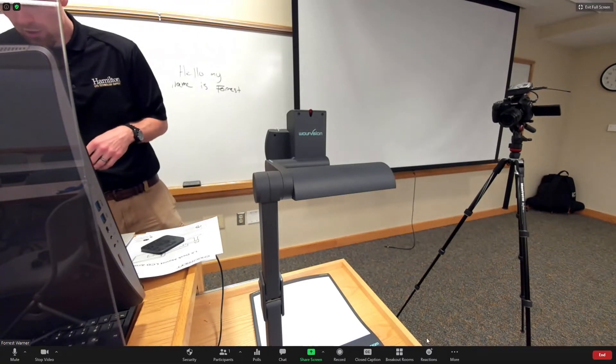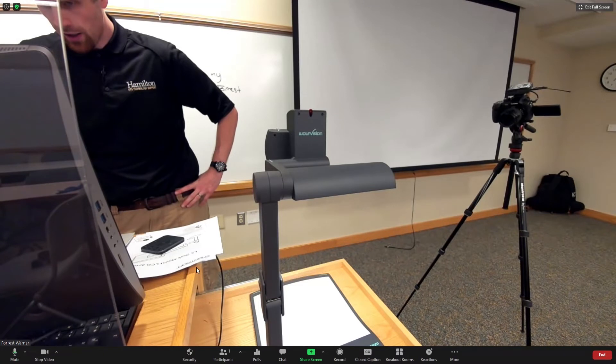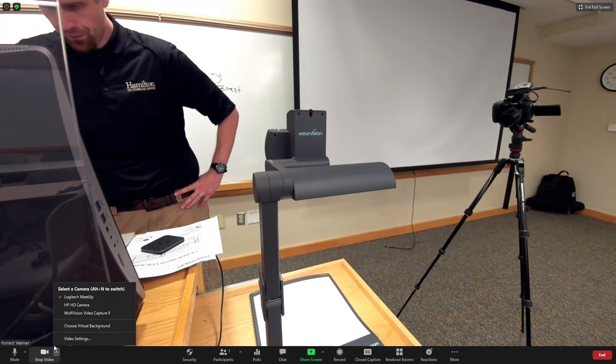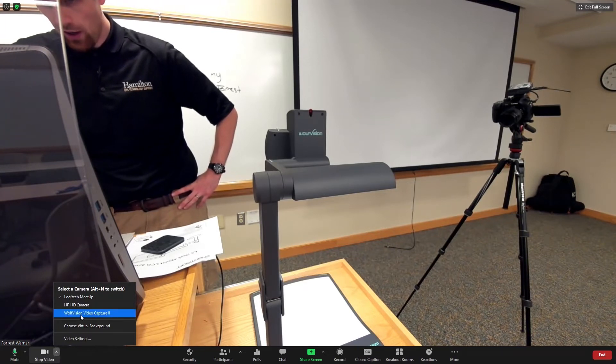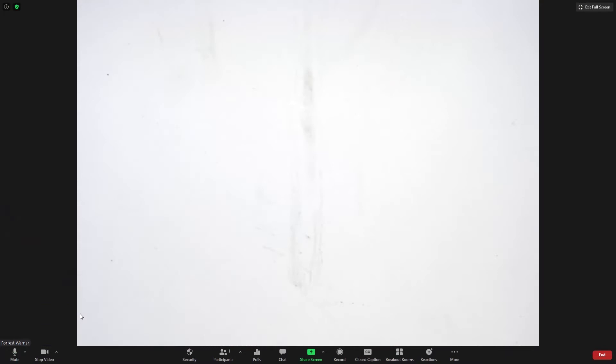So what we will do at this point is go into our settings in zoom. We will change the video source to the Wolf Vision video capture. Now don't be scared. This will take a moment to do the switch over. So give it a moment. Now this is the document camera.